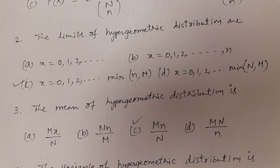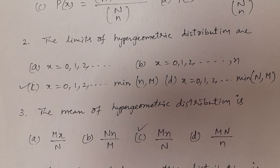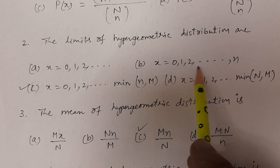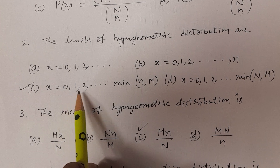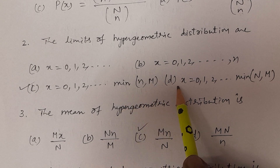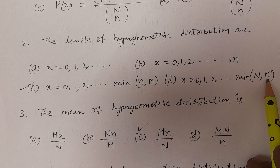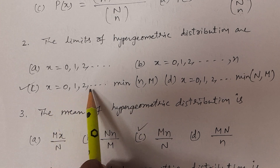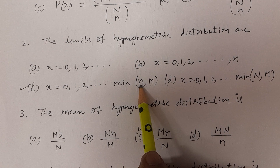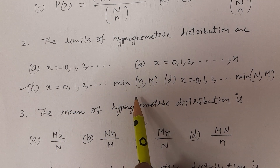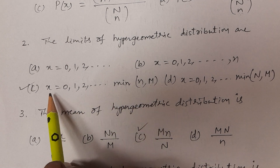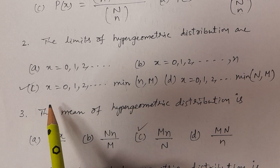Question number two: The limits of hypergeometric distribution. What are the limits? Option A: X = 0, 1, 2, and so on. Option B: X = 0, 1, 2, and so on to N. Option C: X = 0, 1, 2, and so on to minimum of small n and capital M. Option D: X = 0, 1, 2, and so on to minimum of capital N and capital M. The answer is Option C. The variable X takes values up to the minimum of small n and capital M, which is the maximum limit for X.